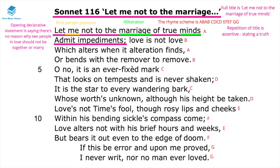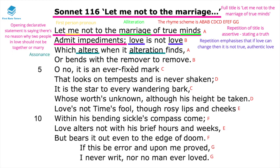In line two, 'love is not love' — the repetition of the word 'love' emphasizes that if love can change, it's not really true authentic love. The assonance in 'alters' and 'alteration' reinforces the idea that if love can alter or change, it's not genuine. In line four, 'or bends with the remover to remove' uses personification of love to show that if love is fickle enough to bend or change, it's not really true love.